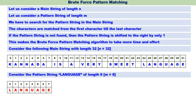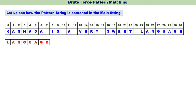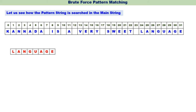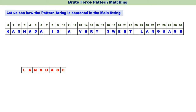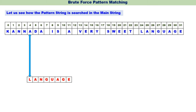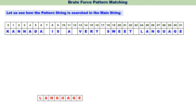Now let us see how this pattern string is found in the main string. Consider the main string; we have the pattern string here. First, character L of the pattern string is compared with K of the main string — no matching, so the pattern is shifted right by one. L and A are compared — no matching, shift right. L and N — no matching, shift right. L and N (different N) — no matching, shift right. L and A — no matching, shift right. L and D — no matching, shift right. L and A are compared — no matching, pattern is shifted to the right by one.